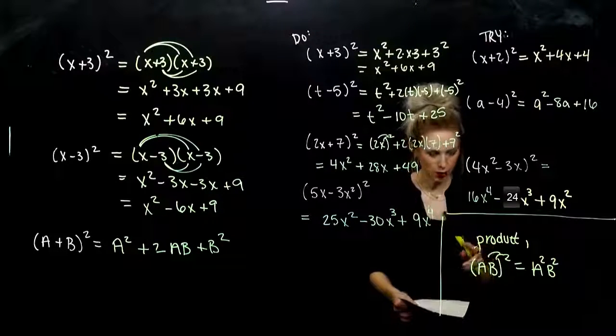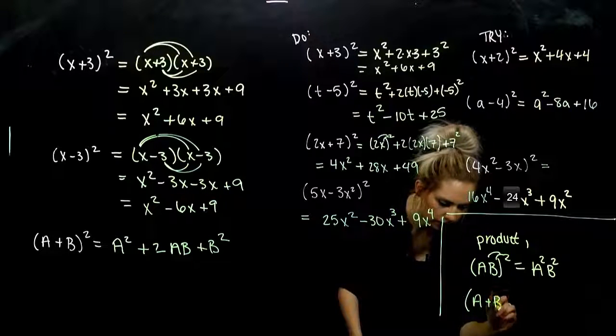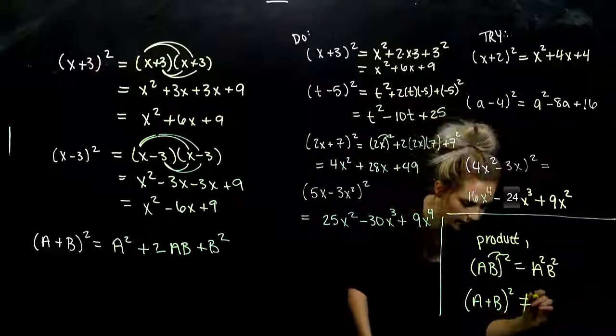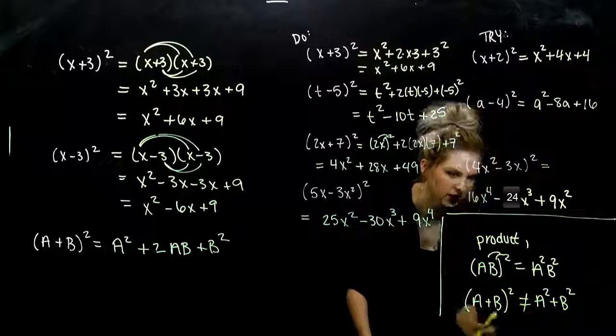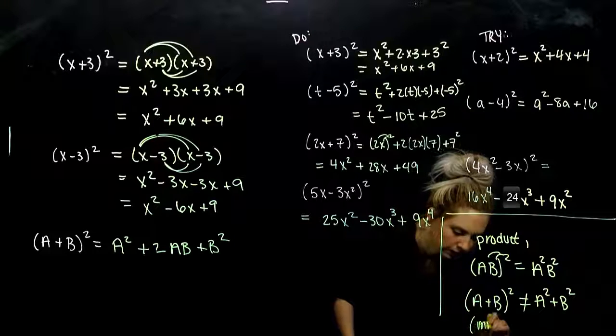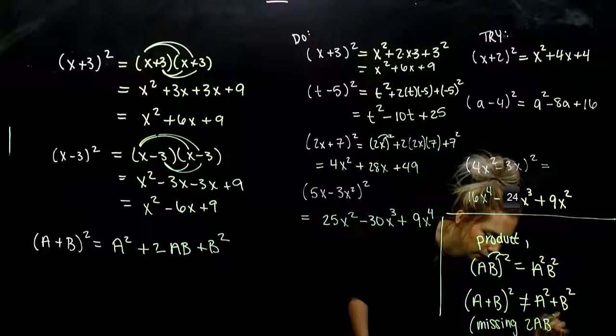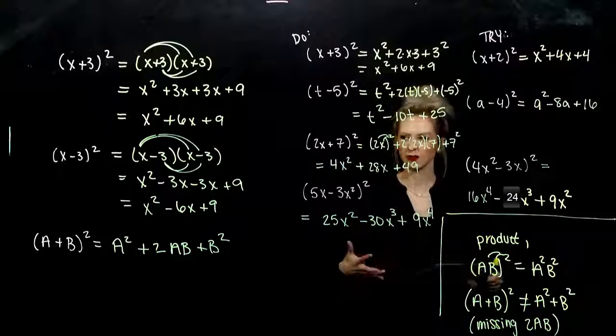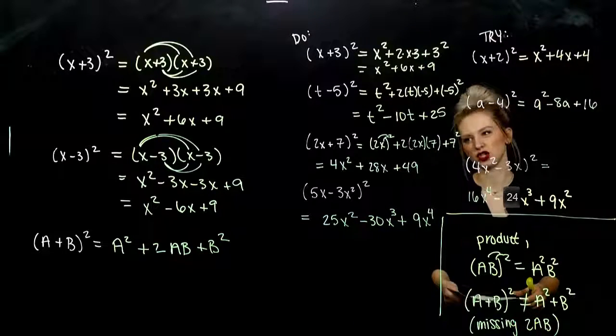It's not true when we have a sum. If I have A plus B squared, it's not equal to distributing over top, A squared plus B squared, because we're missing that middle term. We're missing 2AB in the middle, which is vital when we're working with these problems. Be careful. And if you don't like these again, go back to the traditional foiling method. It'll always get you there.